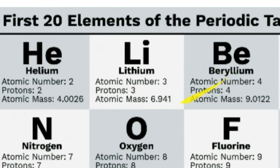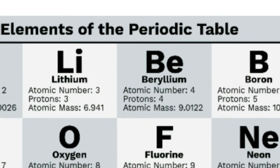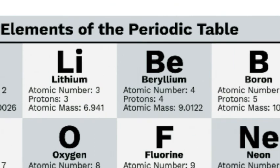Beryllium is the fourth element of the periodic table. Its atomic number is equal to 4, number of protons is equal to 4, and atomic mass is 9. The next one is boron.